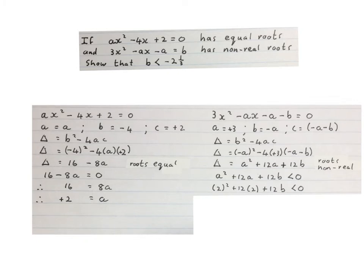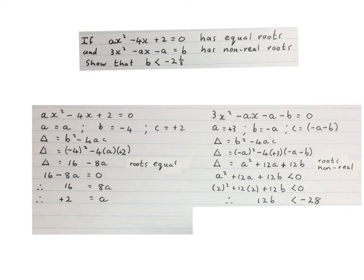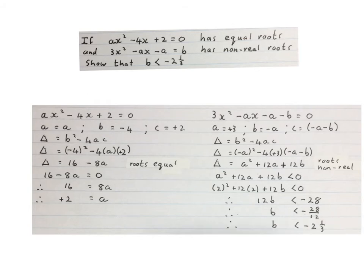We already worked out that a equals 2, so we substitute this value back in — remember to substitute in brackets. Squaring and expanding, we get plus 28, then subtracting 28 on both sides gives 12b is smaller than minus 28. Dividing both sides by 12, we get b smaller than minus 28 over 12, which simplifies to b smaller than minus 2 and a third — which is what we were asked to show.